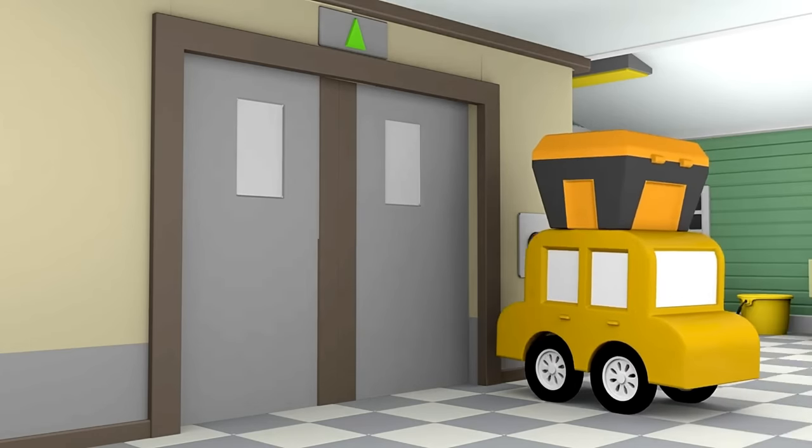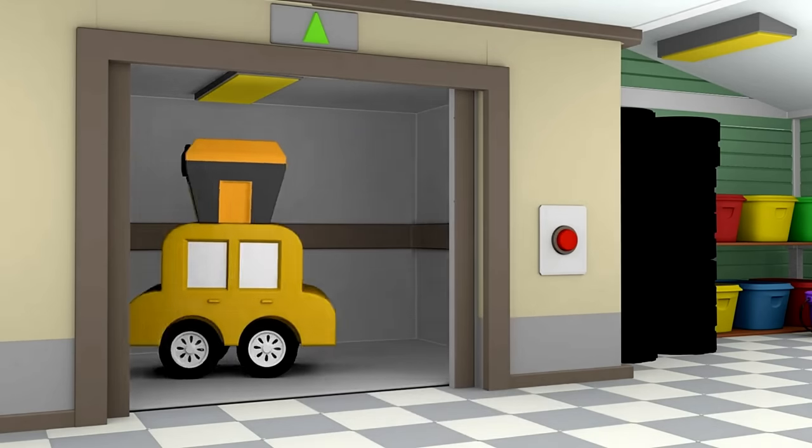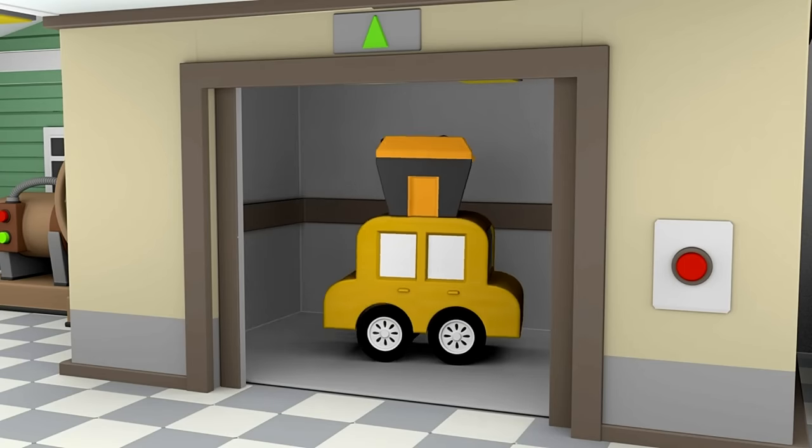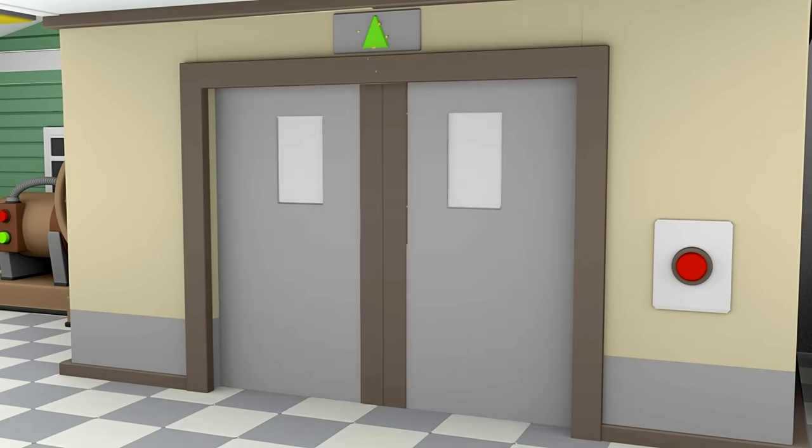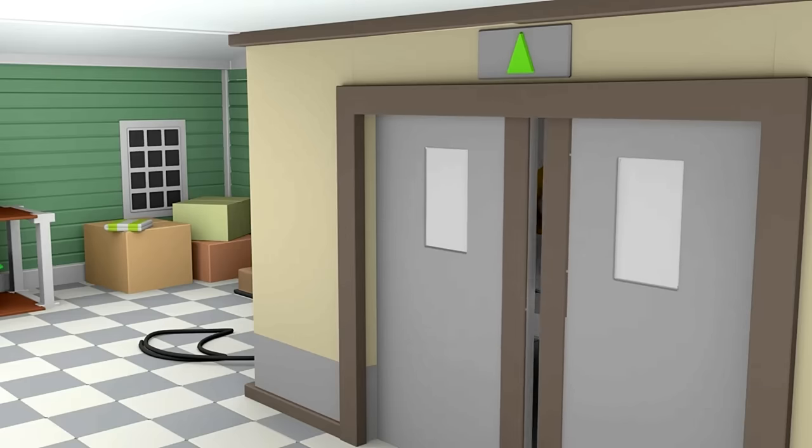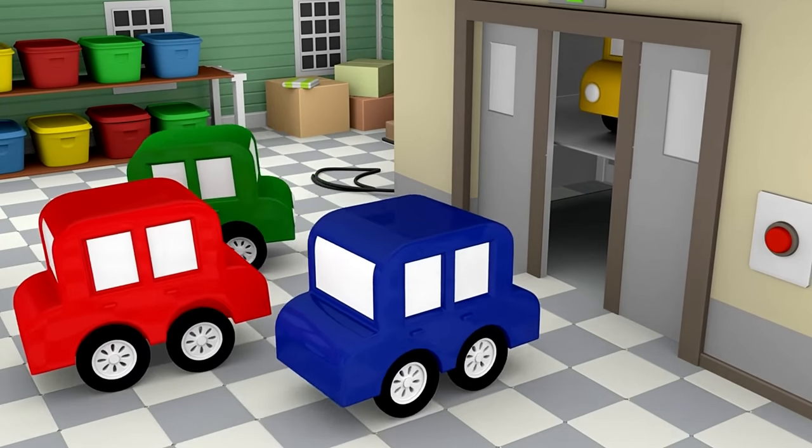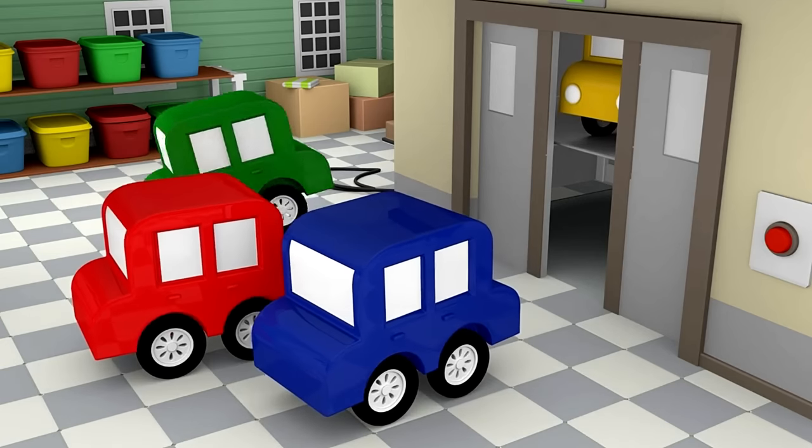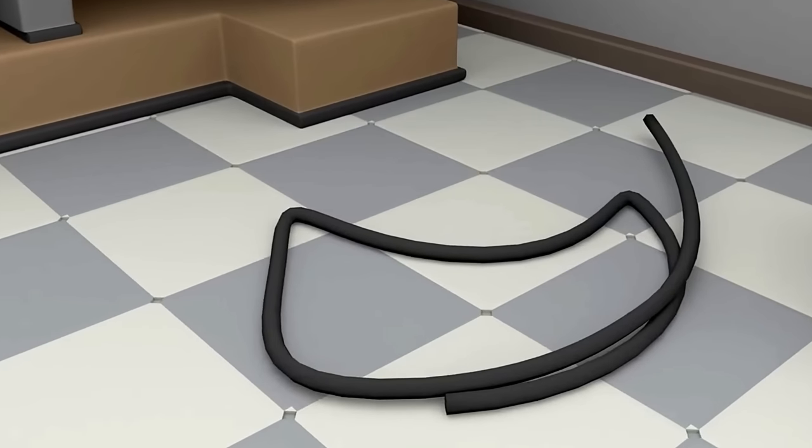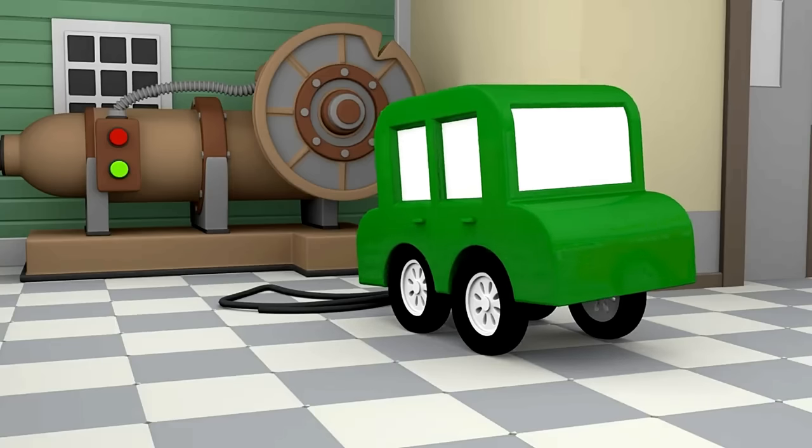The yellow car is calling the lift. He needs to take the big yellow crate upstairs. Oh dear, it looks like there's something wrong with the lift. The doors won't open. The little car has got stuck. The cable has snapped. And the pulley has cracked. The lift has broken down.